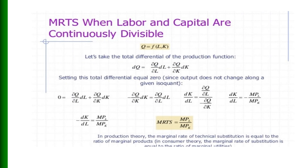When labor and capital are continuously divisible, we can compute the marginal rate of technical substitution (MRTS) by taking the total differential of the production function, setting it equal to zero — because movement from one point to another on the isoquant does not change output. Simplifying, MRTS equals the ratio of the marginal physical product of labor divided by the marginal physical product of capital. In consumer theory, MRTS is equivalent to the marginal rate of substitution, and marginal products of the two inputs are analogous to marginal utilities of X and Y.